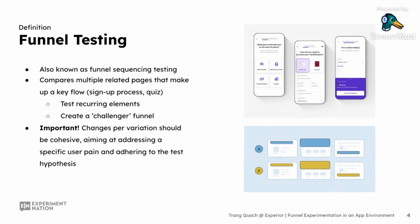It allows us to address user pain points that might stretch across several steps. Traditionally, multi-page testing involves testing recurring elements only, such as security certificates or a persistent live chat modal across multiple pages of the funnel, to see how their presence or absence impacts conversions. Alternatively, you can create a challenger funnel with changes across all relevant pages and compare it against the original funnel — the control. Any changes we make per variation should be cohesive, creating a unified experience that aligns with our hypothesis and addresses user frustration across the funnel.